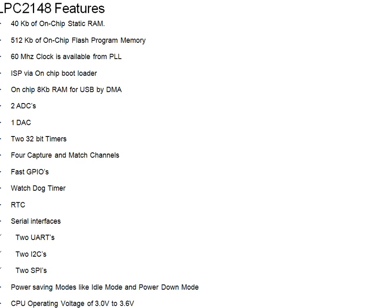For serial interface protocols, it contains two UARTs (Universal Asynchronous Receiver and Transmitter), two I2C (Inter-Integrated Circuit) interfaces, and two SPI (Serial Peripheral Interface) interfaces. These will be discussed in detail in upcoming videos.